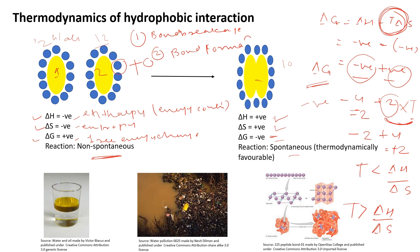So whenever we add any non-polar substance in water, they will tend to aggregate with each other, because aggregation is the only thermodynamically favorable state. Examples include oil and water — oil droplets cannot remain dispersed in water; they aggregate at one place. When plastic bottles or any non-polar pollutants are added to water, they also aggregate. Similarly, in biological systems, protein folding and the renaturation of DNA all depend on temperature — at what temperature they will be thermodynamically favorable.